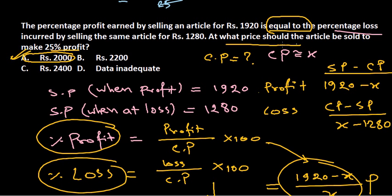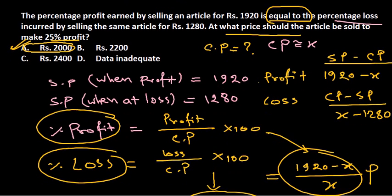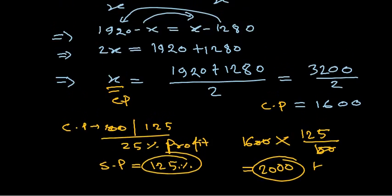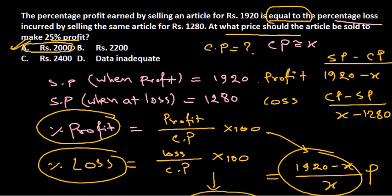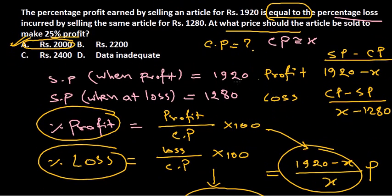So 2000 should be the selling price — answer A is the correct answer. This problem is straightforward once you find the cost price first, which makes everything much easier to solve. I hope that's helpful, guys. Thank you.